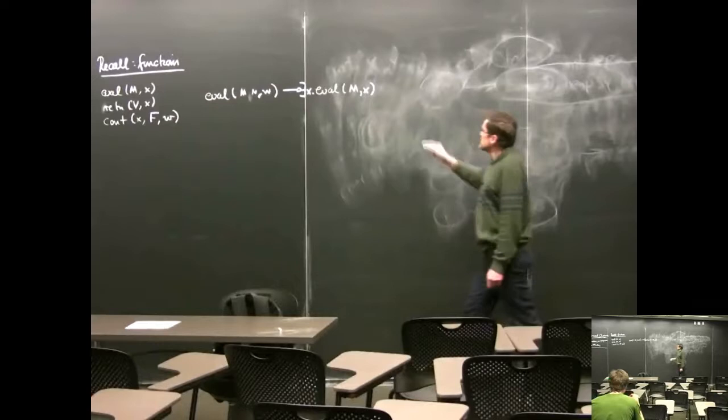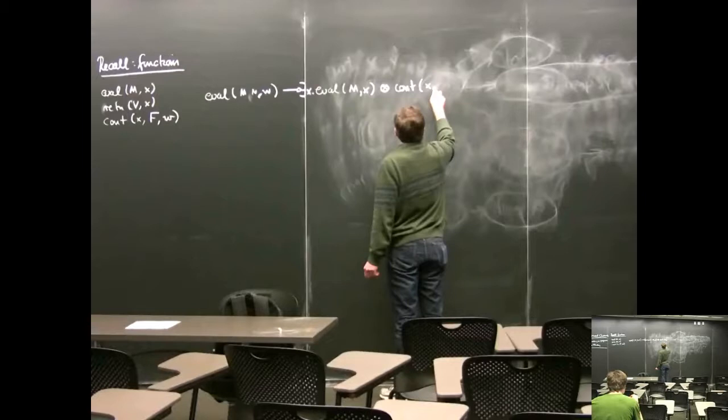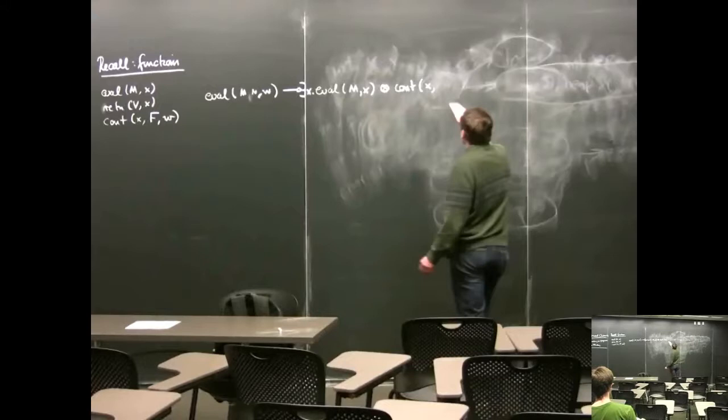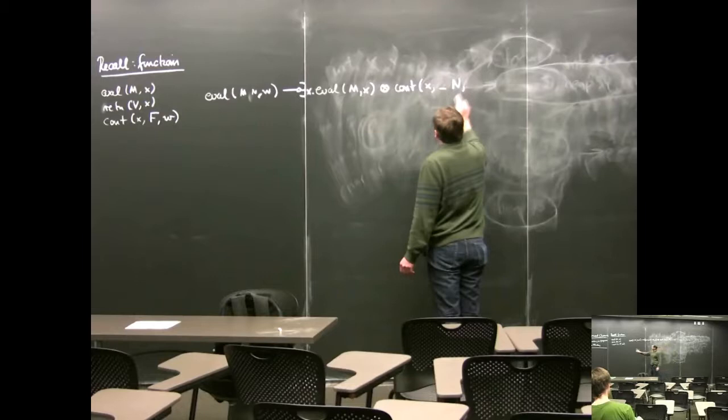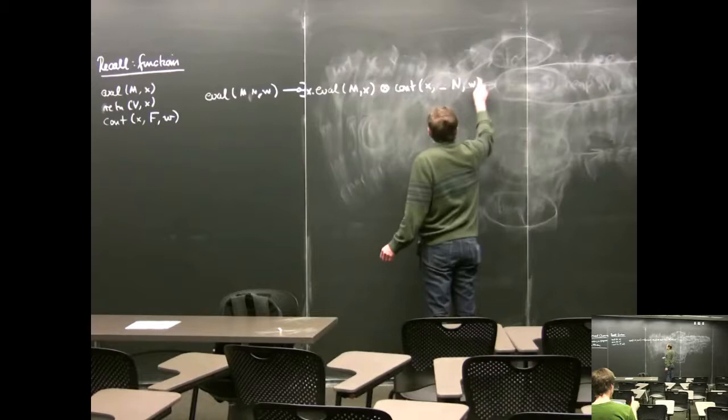So we evaluated that. What else did we do? We have to wait for that — the continuation is waiting for X. And what does it do when it gets its argument? We have to take whatever you get and apply it to N. The continuation took three arguments: one is where we deposit our result, which will be W — the W that we started with.